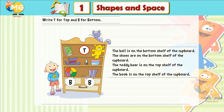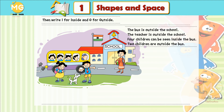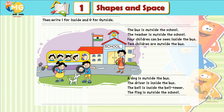The book is on the top shelf of the cupboard. Write I for inside and O for outside. The bus is outside the school. The teacher is outside the school. Four children can be seen inside the bus. Two children are outside the bus.